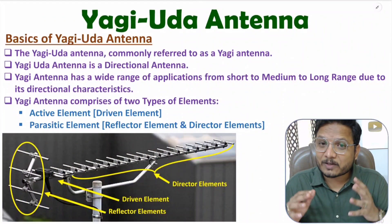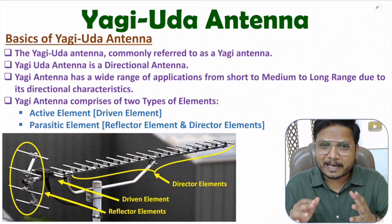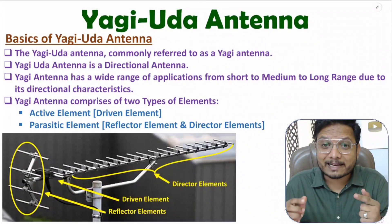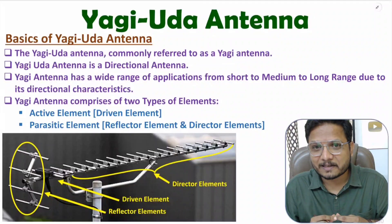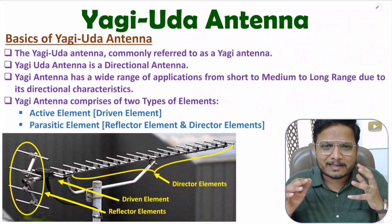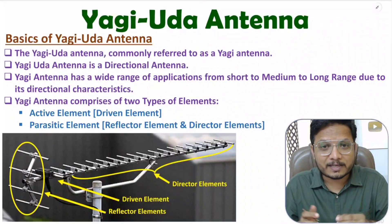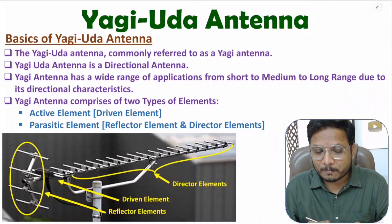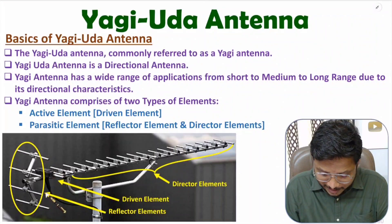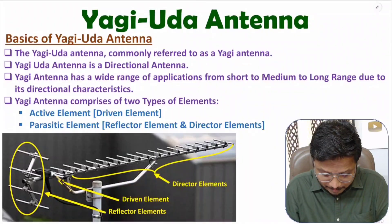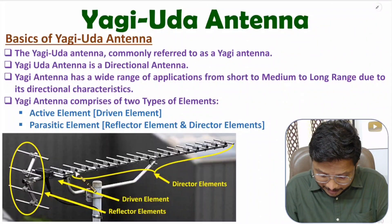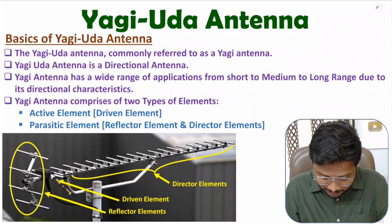Yagi-Uda antenna is also referred to as Yagi antenna. Yagi antenna has directional radiation characteristics, so we use it in directional applications. If you observe one basic structure of Yagi antenna, we have three categories of elements: director elements, driven element, and reflector element.